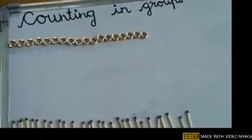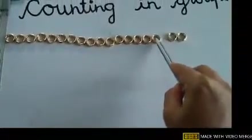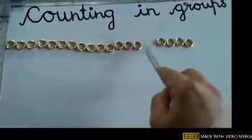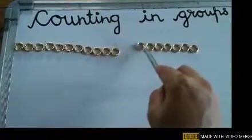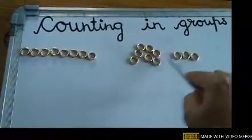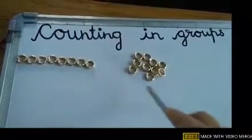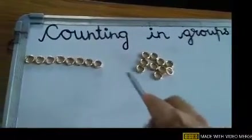Can you see the rings here? We have to count before telling their number. Let us count the rings: 1, 2, 3, 4, 5, 6, 7, 8, 9, and 10. So here these are 10 rings — I have made a group of 10 rings.